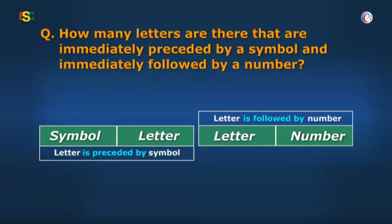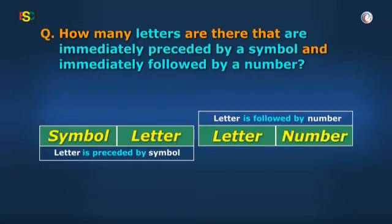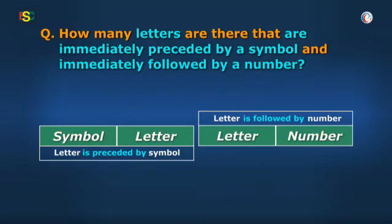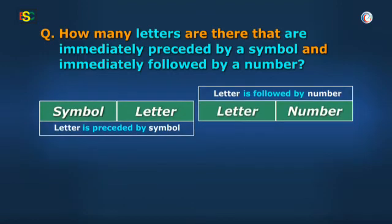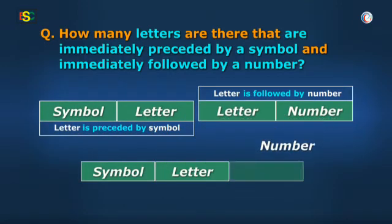Yes, but Vidya, here we have to be watchful. We are looking for letters that are immediately preceded by a symbol as well as immediately followed by a number. In other words, we have to look for the sequence symbol-letter combined with the sequence letter-number. Thus, in such cases, we have to actually search for the triplet: symbol, letter, number.